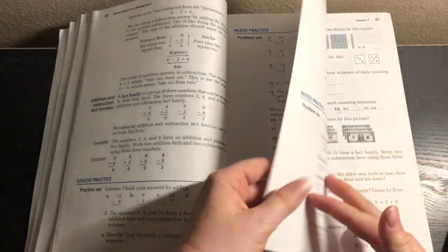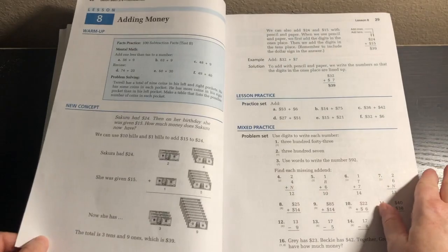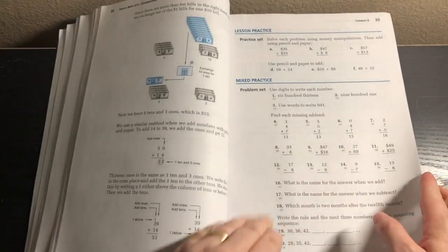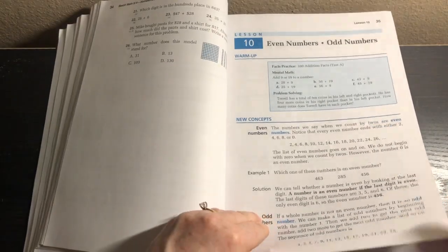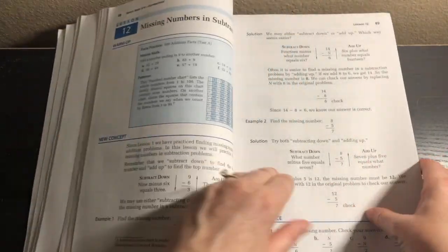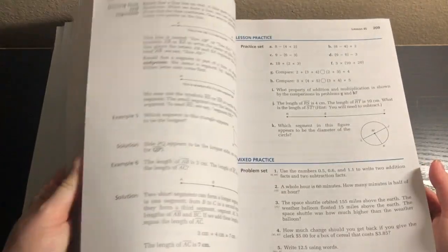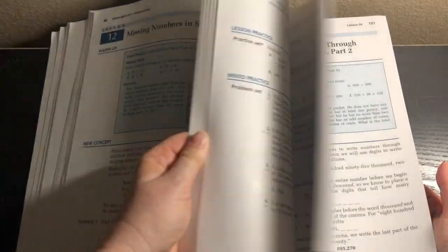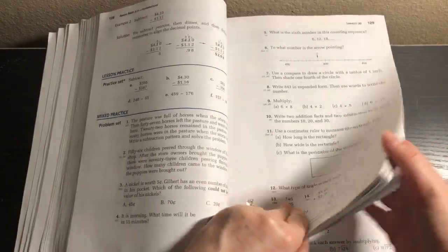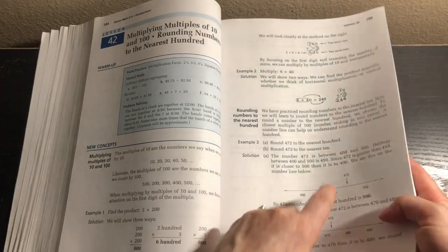As you can see, there's no real color, there's some blue but that's about it. But there are pictures of money. I actually have a video on Instagram that shows some manipulatives and things that I'm going to be using with this. This doesn't come with any manipulatives or anything like that, but I explained my planning process in that.